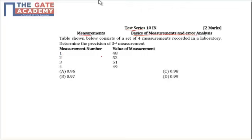This is the table: measurement 1 is 48, measurement 2 is 52, measurement 3 is 51, and measurement 4 is 49. So we have to find the value of precision of the measurement at 51.